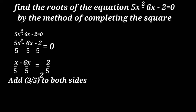Then, x² - 6x/5 + (3/5)² = 2/5 + (3/5)².